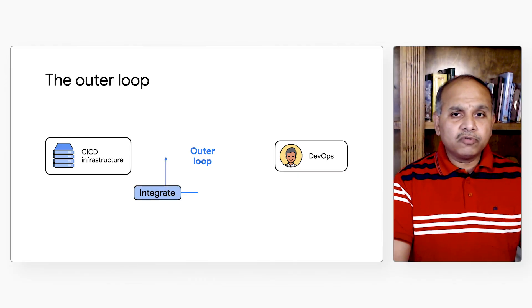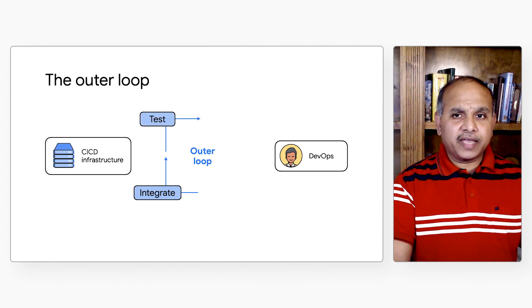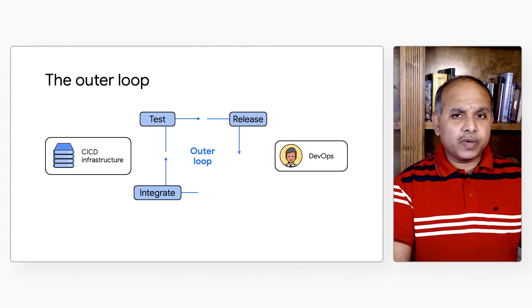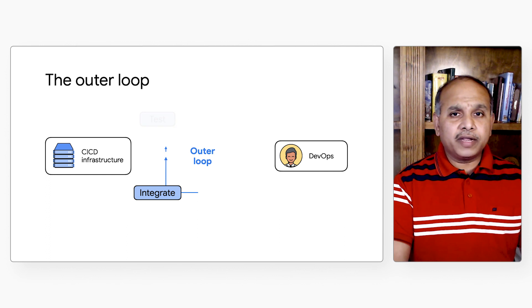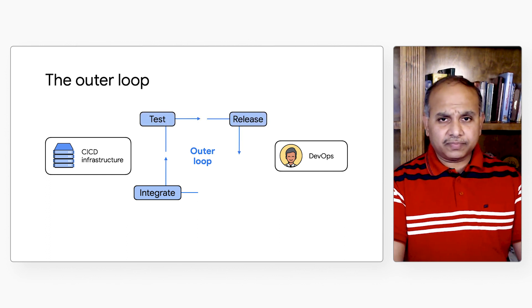The outer loop, on the other hand, is where all the developer's code is integrated into one place, built, tested, and deployed. Code moves through different stages like QA, staging, and production. This is all done on CI/CD infrastructure.